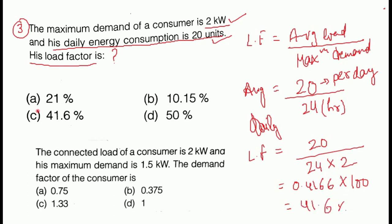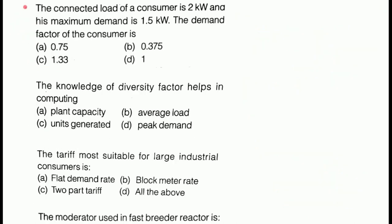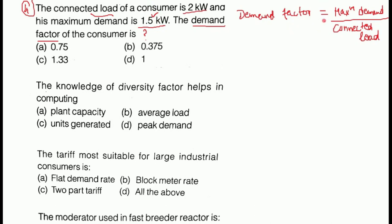Therefore option C here is the correct answer. Next is question number 4. The connected load of a consumer is 2 kW and his maximum demand is 1.5 kW. The demand factor of the consumer is what? Demand factor is equal to maximum demand divided by connected load. Maximum demand is 1.5 kW and connected load is 2 kW. Demand factor = 1.5 / 2 = 0.75. Therefore option A is the correct answer.